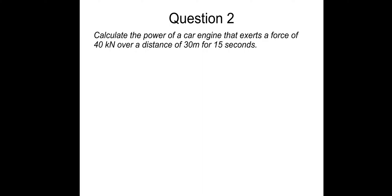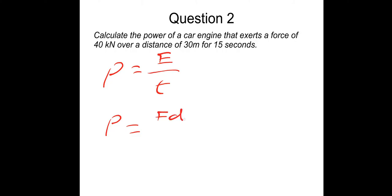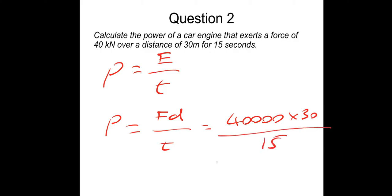Question two: calculate the power of a car engine that exerts a force of 40 kilonewtons over a distance of 30 meters in 15 seconds. Power is work done over time, and work done is force times distance, so it's force times distance divided by time. That's 40,000 multiplied by 30, divided by 15 seconds, giving us 80,000 watts, or 8 × 10⁴ watts.